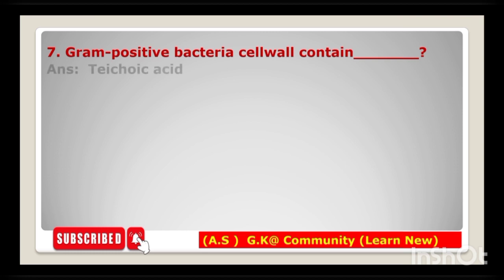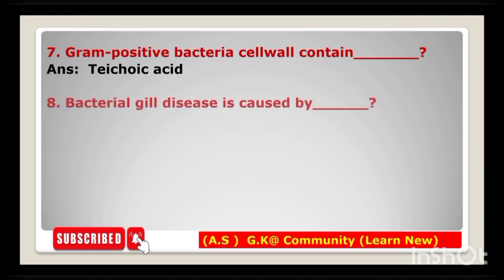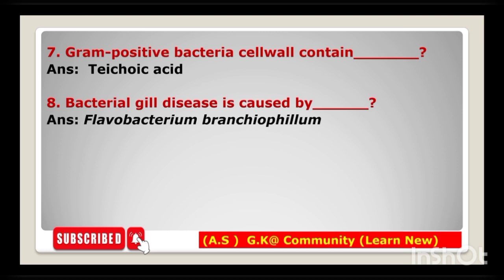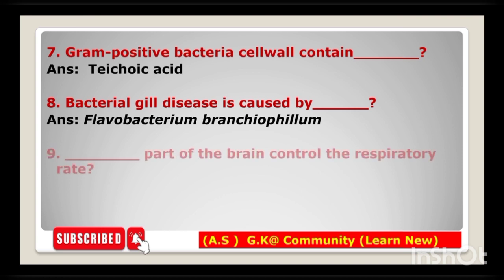Next question: gram positive bacteria cell wall contains which acid? The answer is teichoic acid. Next: bacterial gill disease is caused by Flavobacterium branchiophilum. Next question: which part of the brain controls the respiratory rate? The answer is the hindbrain.